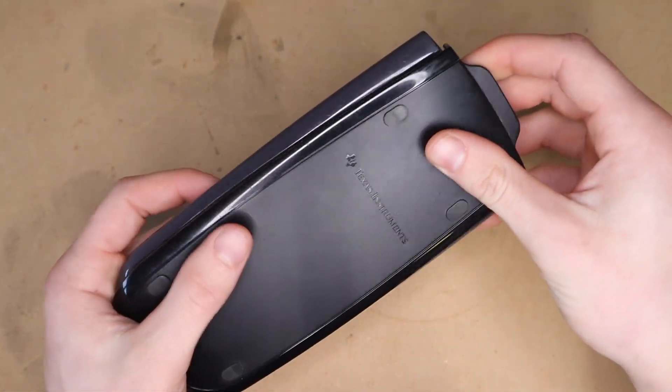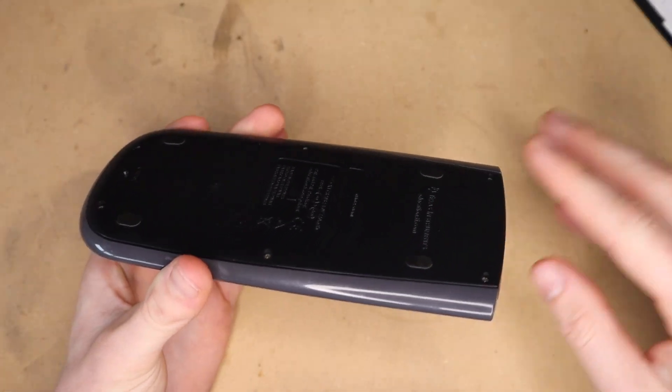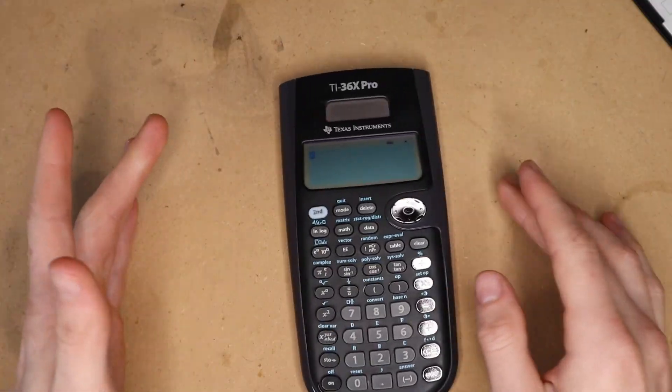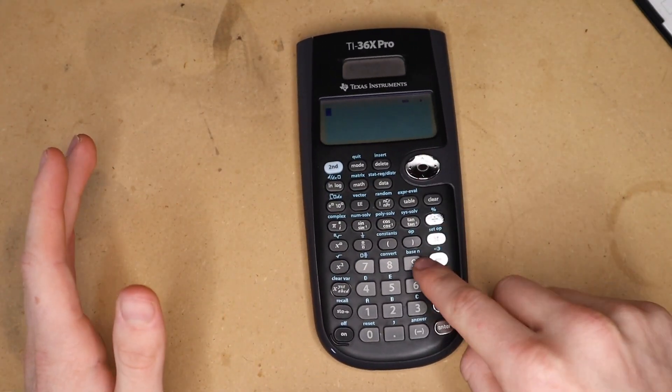And then it also fits over the back. Both the case and the calculator itself have these feet on the back, which make it sit flat on the table, and it doesn't slide around when you push buttons.